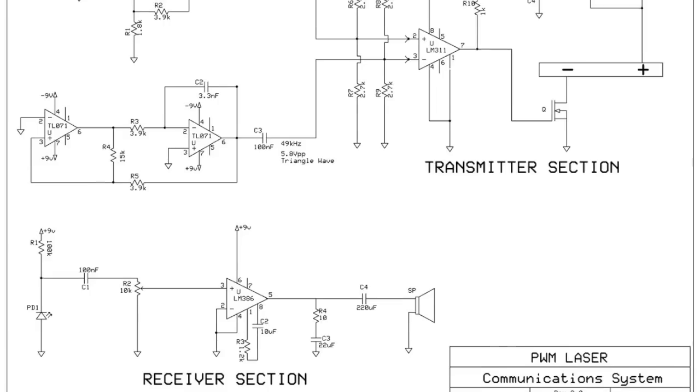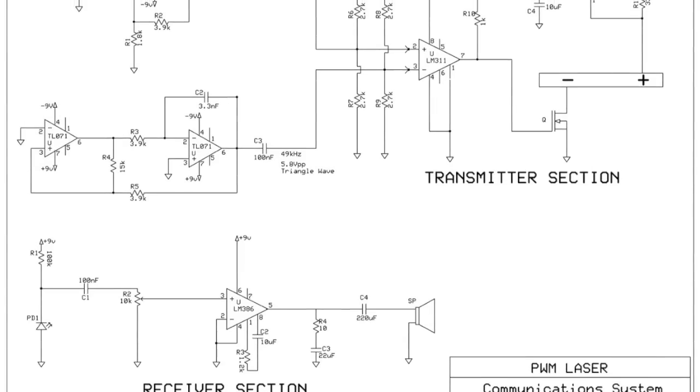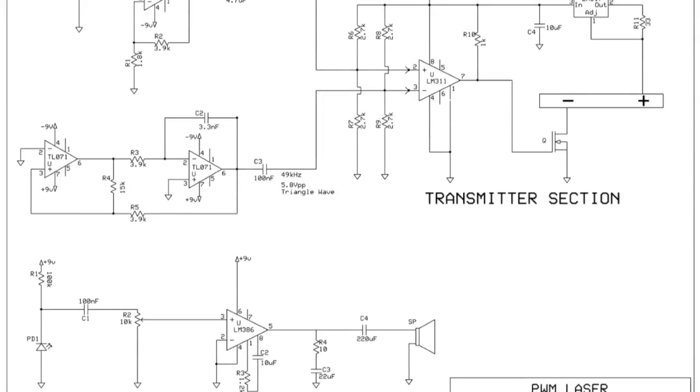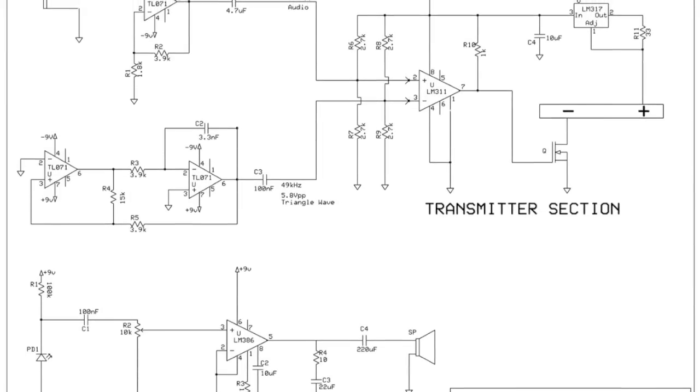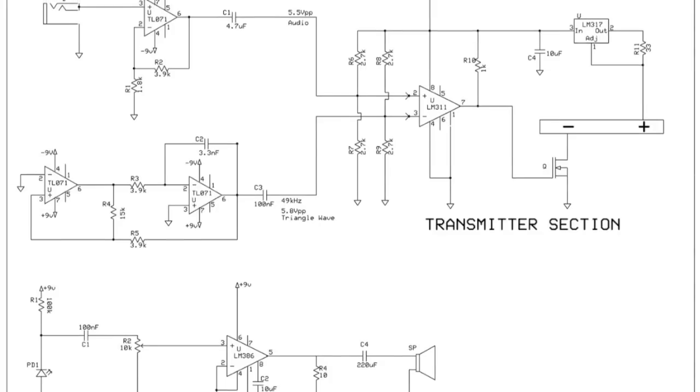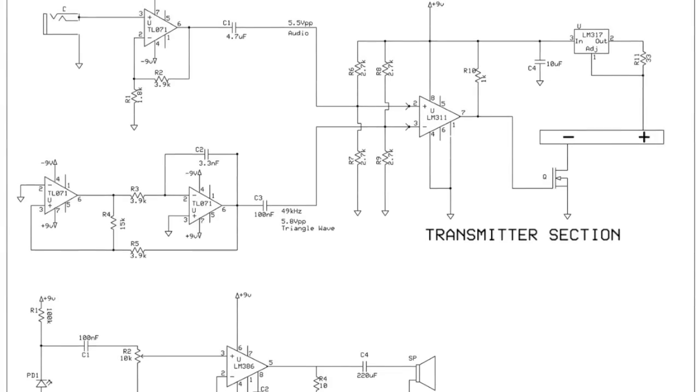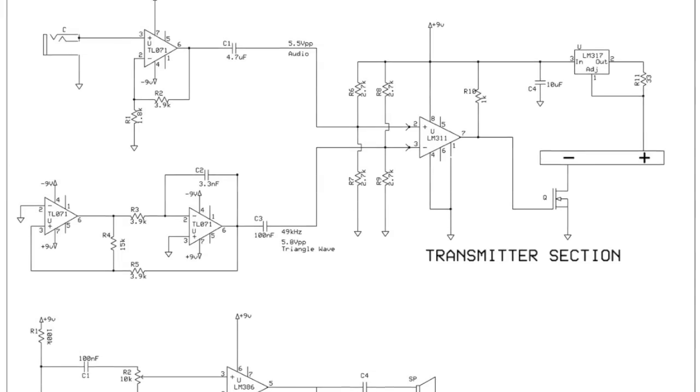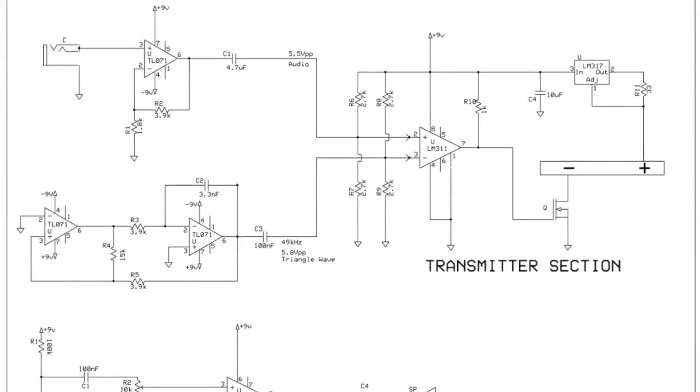So this is a good project for demonstrating the concept of free space optical communications, which is used in applications where you can't generally provide some kind of wired link or radio link between a transmitter and receiver. Something like in a CBD, where you've got a lot of buildings around and you want to get a direct link from building to building. So I'm going to take you through each module now and just talk a little bit about how it works.